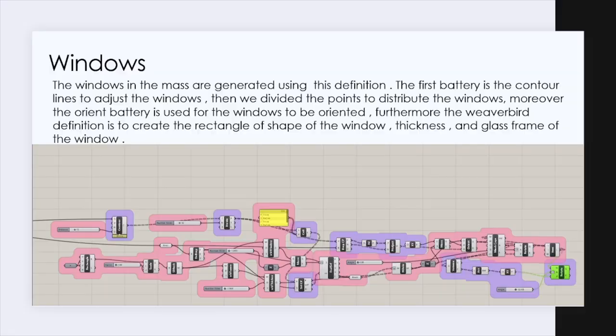The second element is the windows, as they are generated using the definitions below. The first part is the contour line to adjust the windows, and we use the weaver-bird mesh definition to create the rectangle of the shape of the window, the thicknesses and glass frame of the window.